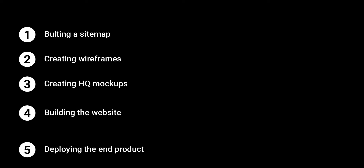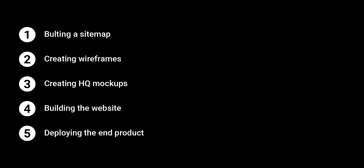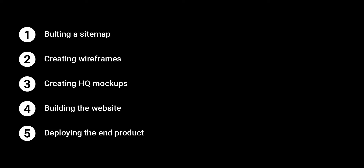This series is split into five parts. Part one: planning a sitemap. Part two: wireframing and the initial layout and design. Part three: high-quality mockups in Figma. Part four: building the website in code. Part five: deploying the site to a hosting server so everyone can view it. Today we're focusing on part one — building a sitemap.